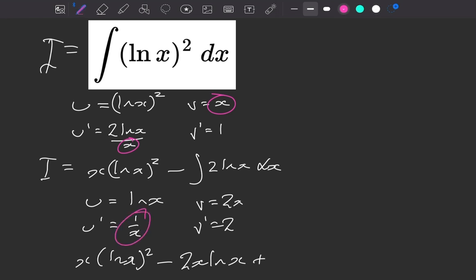the 1 over x times 2x, so that gives us just 2. So the integral of 2 is going to be 2x, and we'll have a plus c as well.